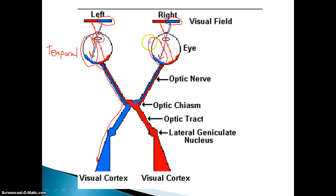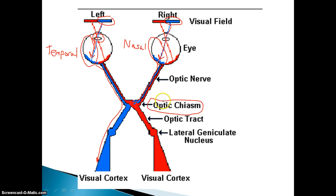On the other side, something a little bit more confusing happens. This here is on the nasal side of your body — that means it's close to your nose. So the left side of your right eye is closer to your nose. The image is going to pass down the nasal fiber, but it's going to have to cross over at what's called the optic chiasm. The nerve is actually going to cross over to the other side of your brain at the optic chiasm. So the left side of your brain is going to handle everything that you see on the right side of your body.